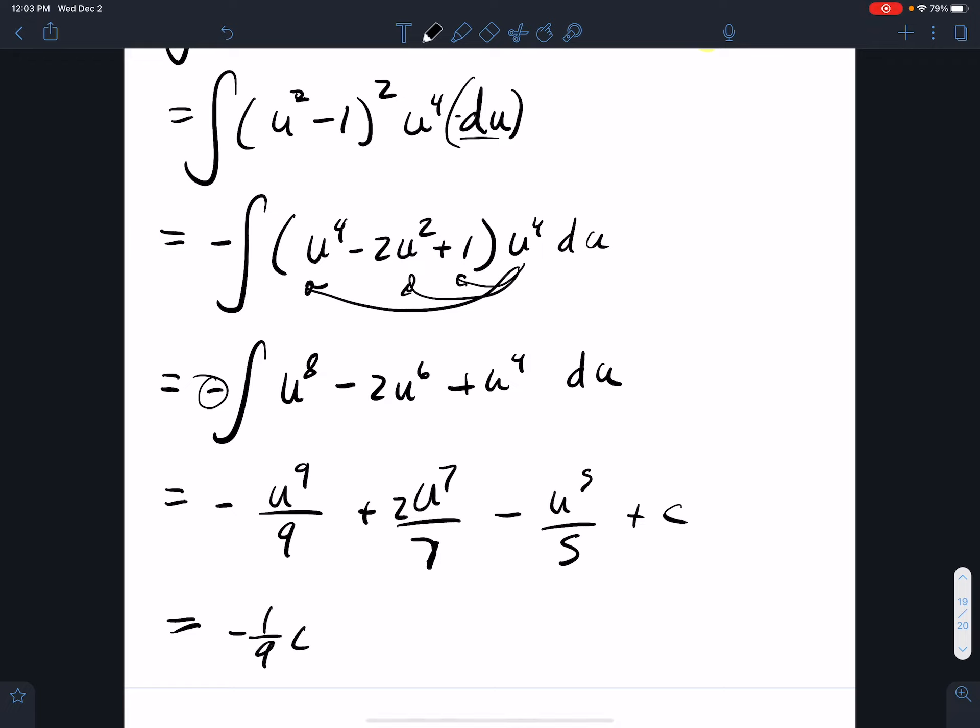Okay, and then plus c. My original answer was in terms of u, so I'm going to make it in terms of u: negative one ninth cosecant to the ninth x plus two over seven cosecant to the seventh x, and then minus one fifth cosecant to the fifth x plus c for my answer there.